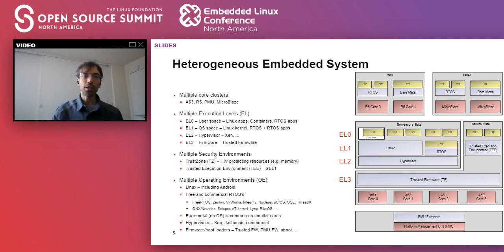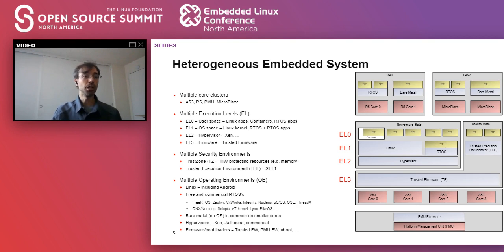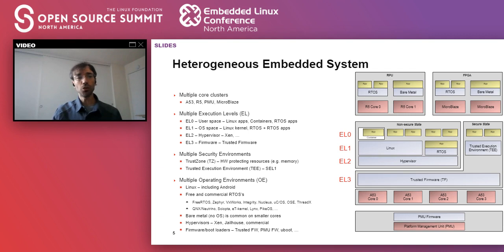In other words, an SoC of today looks a bit like a whole data center on chip. There are many clusters of very different cores running alongside. Some of them, like the Cortex-A cluster, have multiple execution levels, and very different software runs at each level — user space, kernels, hypervisors, and secure world, with secure EL0 and secure EL1. This brings us a very rich ecosystem of software and operating systems that needs to be installed, run, and coordinated across the SoC.